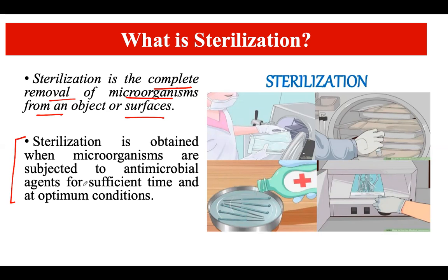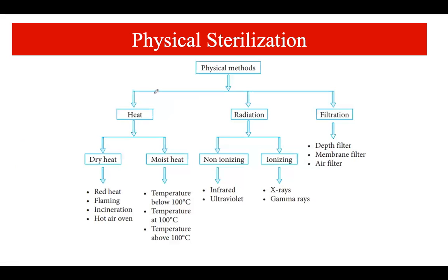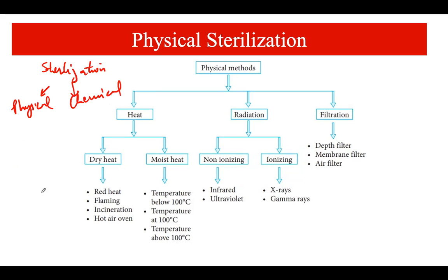Sterilization is obtained when the microorganisms are subjected to antimicrobial agents for sufficient time at optimum conditions. There are different types of sterilization methods, and all these methods involve a certain time period and exposure to some kind of treatment. The sterilization methods are basically of two types: physical methods and chemical methods of sterilization.